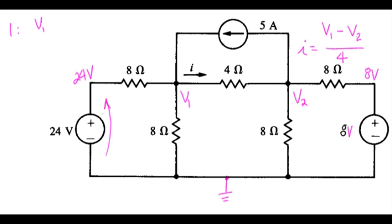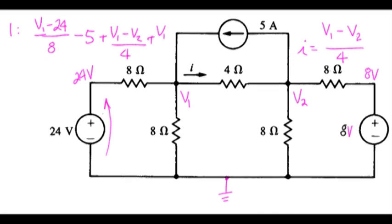At node 1, we could write: the current going straight west is V1 minus 24 divided by 8. The northward current is minus 5. The eastbound current is the voltage across the resistor divided by the resistance, plus the southbound current is V1 divided by 8. The sum of those currents is 0.